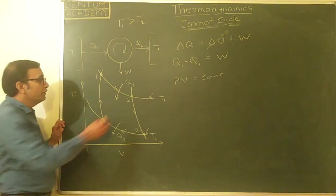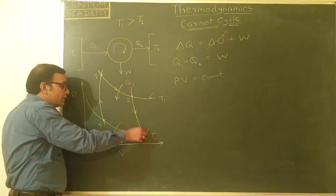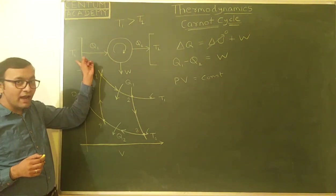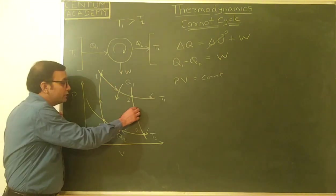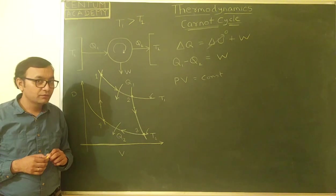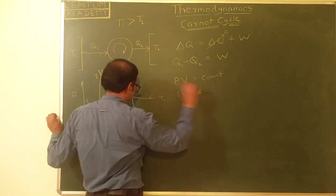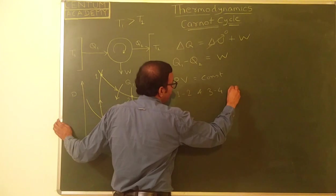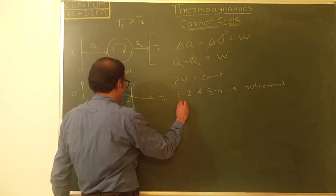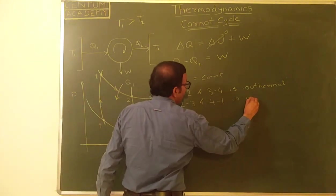Since it must be a cycle, we need to connect these two isothermal processes. Heat is absorbed only at T1 and released only at T2, so whatever processes connect them must not exchange heat with the surroundings — they must be adiabatic. The Carnot cycle therefore has: processes 1→2 and 3→4 as isothermal, and processes 2→3 and 4→1 as adiabatic.